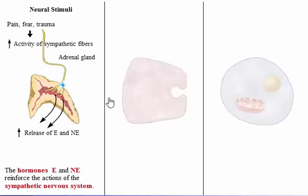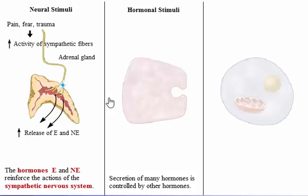Secretion of many hormones is controlled by other hormones. The ventral hypothalamic hormones and tropic hormones from the anterior pituitary — thyroid-stimulating hormone, adrenocorticotropic hormone, follicle-stimulating hormone, and luteinizing hormone — are classic examples.